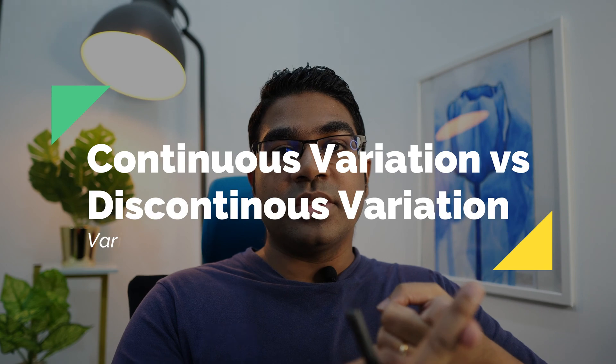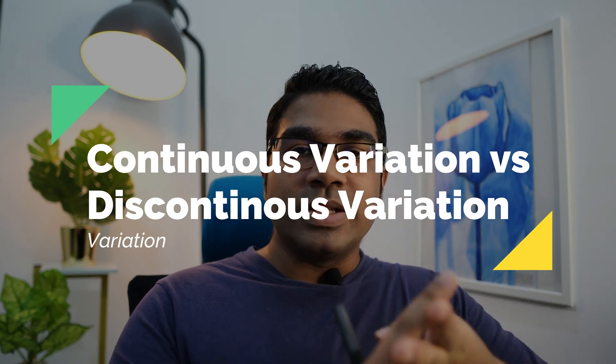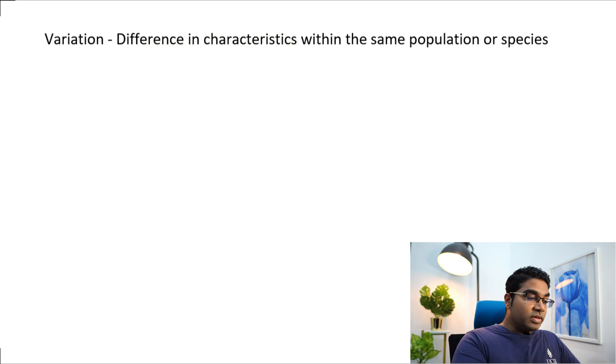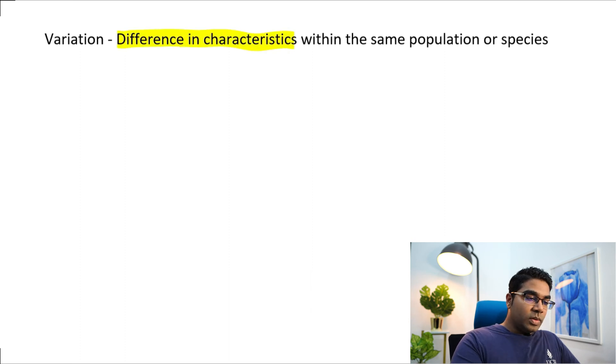Hey guys, in this video we'll be looking at variation. We are specifically going to compare between continuous variation and discontinuous variation. First, let's define variation. Variation is a difference in characteristics within the same population or species.